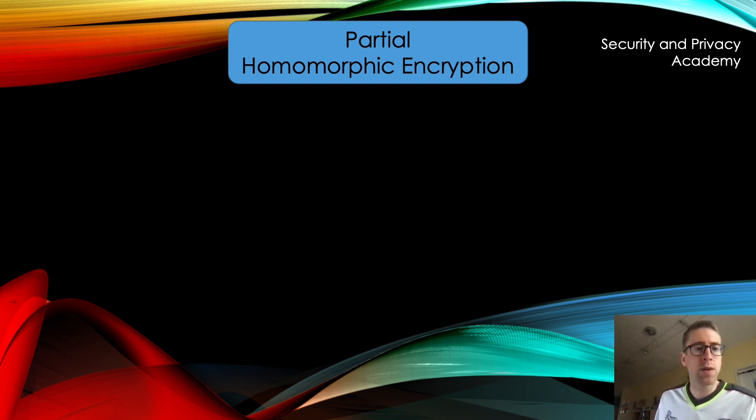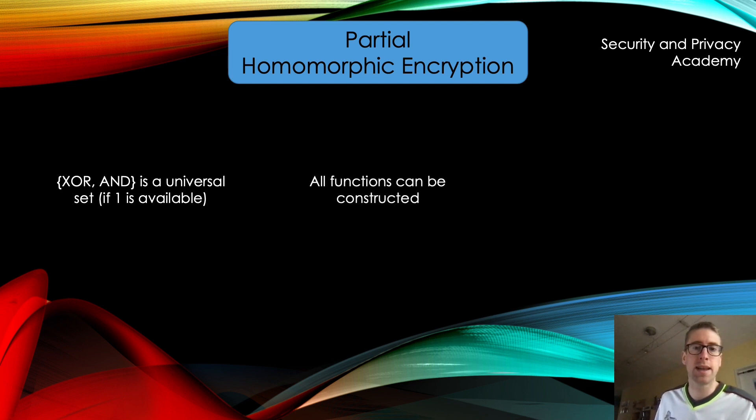So XOR and AND is a universal set if I have a constant 1 available as input. Otherwise, it's not universal. But if I do have a 1 as input every time I want, then XOR and AND is a universal set. That means that any function can be constructed using only these two operations. You can think of functions being represented as circuits, like a logical circuit that only uses XOR and AND gates, and the occasional 1 as input, in order to fulfill a certain operation. So you can basically do everything you want in a boolean circuit using only XOR and AND gates.